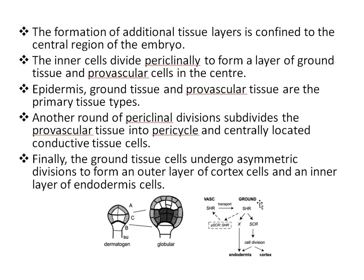Another round of periclinal division then subdivides the provascular tissues into pericycle and centrally located conductive tissue cells. Finally, ground tissues undergo asymmetric division to form the outer layer of cortex cells and the inner layer of endodermis cells.